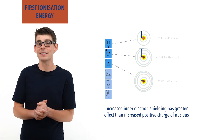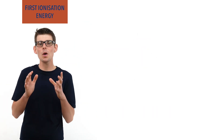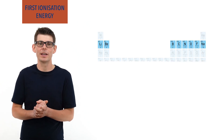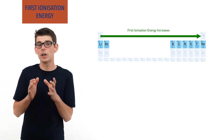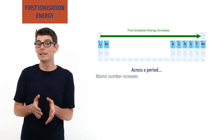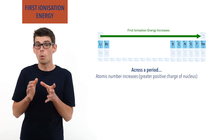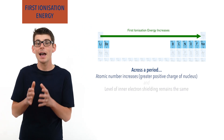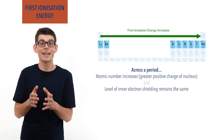This isn't the case, however, when we move across a period. As you go across a period in the periodic table, first ionization energy increases as a trend. This is because across a period atomic number increases, meaning more protons and positive charge in the nucleus, whilst the level of inner electron shielding stays the same, as all elements in the same period have the same number of inner electron shells.